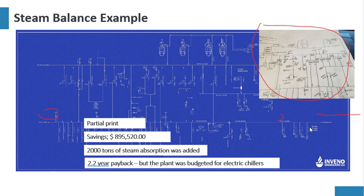Therefore, the savings was $895,520. The thing is, to consume the steam that's being vented to atmosphere, they had no use for low pressure steam. However, we implemented steam absorption units, and we put in about 2000 tons of steam absorption, which consumed the flash steam or the excessive steam that was being vented to atmosphere. Had a 2.2 year payback, but the plant was budgeted to put in electric chiller units anyway, so we shared the cost with that. It still ended up at 2.2 year payback. My point is that again, couldn't understand the dynamics of the system unless we did this steam balance.